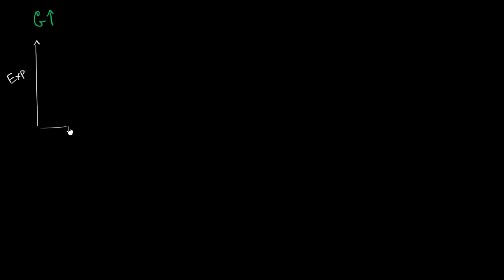Let's think about what happens to an IS curve when government spending goes up. To think about that, let's first draw our Keynesian cross. On the vertical axis we have aggregate expenditures, and on the horizontal axis we have aggregate income. These are really just two ways of talking about GDP. We want all of the points where the economy is in equilibrium, where income is equal to expenditures, and that's why we draw that line of slope 1.